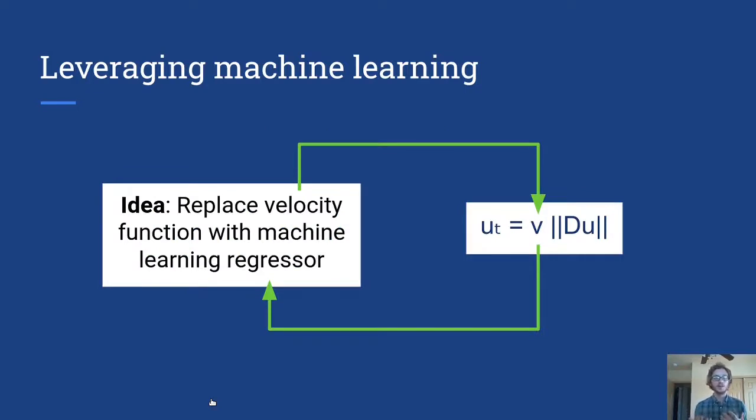Okay so let's suppose that's the case. We have a data set of images that have been annotated of where the boundaries of things are in those images. We want to use that as training data to eliminate the manual design of the velocity function in the level set approach. Here's the idea. Let's just replace the velocity function with some sort of machine learning regressor.